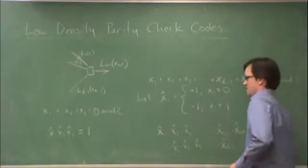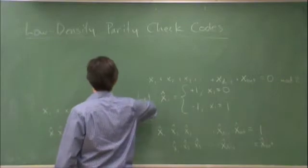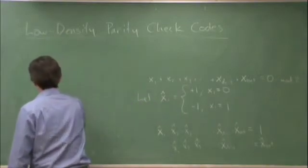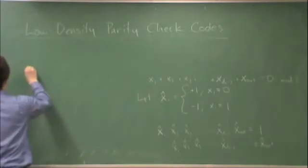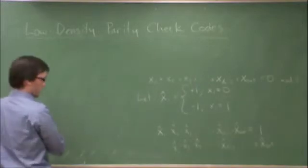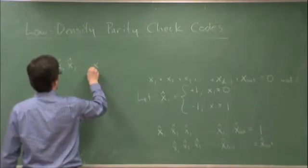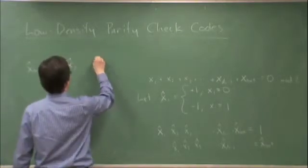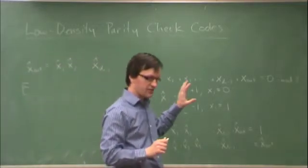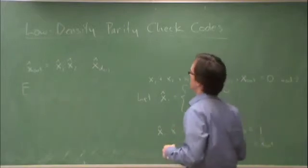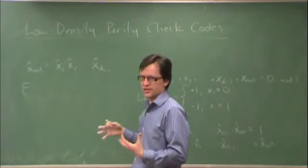Now, what I'm going to do is the following. Let's look at the following operation. x hat out is equal to x1 hat times x2 hat and so on up to xdc minus 1 hat. Now, by assumption, because we're assuming that the factor graph is cycle free, we're assuming that all of these variables are independent or all of the messages leading up to them are independent.